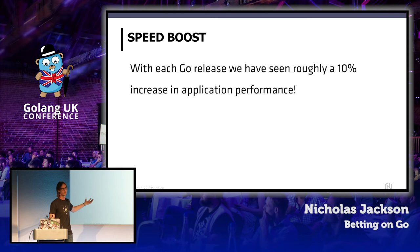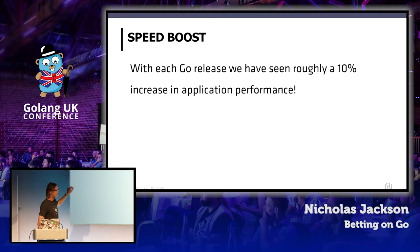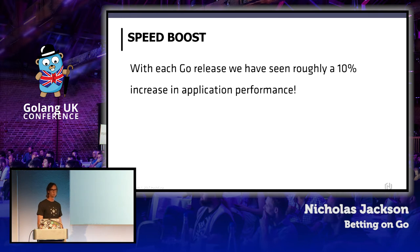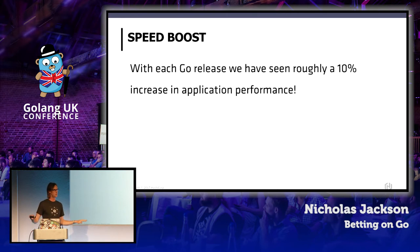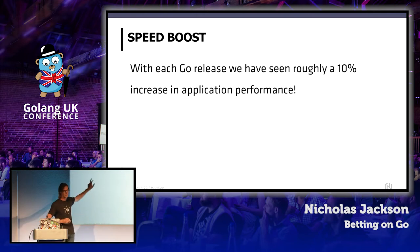And then there's the speed boosts. This has got to be the craziest thing in any language. We estimate that we've had a 10% speed boost in our applications from just upgrading Go — literally just upgrading from 1.7 to 1.8 to 1.9 — because of the optimizations that go into things like garbage collection and other elements. That is amazing.